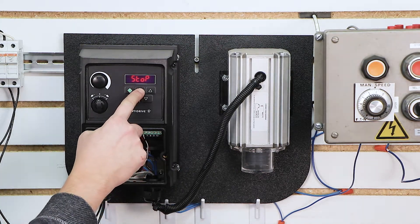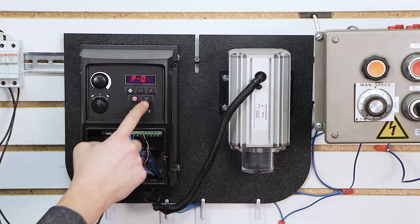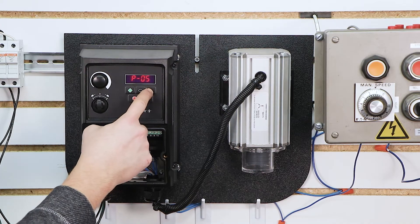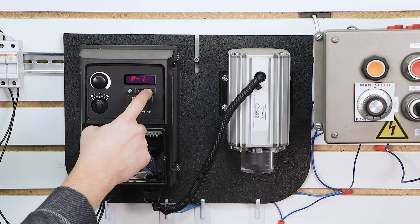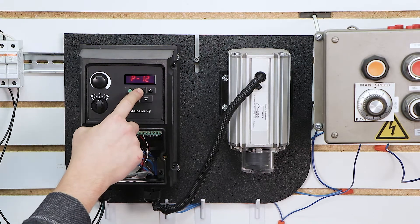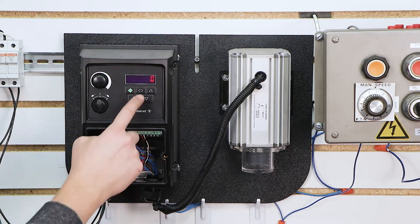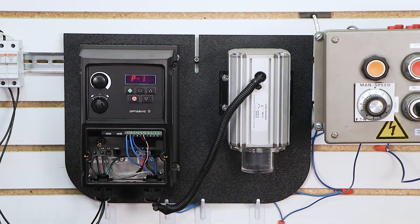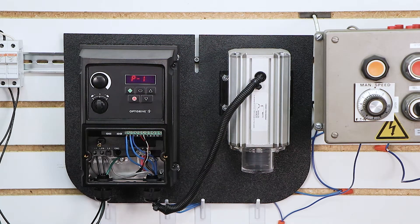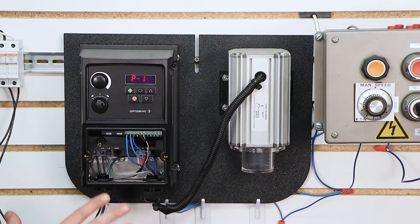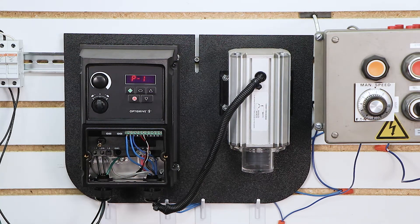So I'm going to hold this middle button here, and it brings up P1. I'm going to use the up arrow keys to get up to P12. Select that middle button again, and it's already set to zero for mine. So I'm going to go ahead and click the button again to select it. So now it's saved as the standard terminal strip control for the start command.